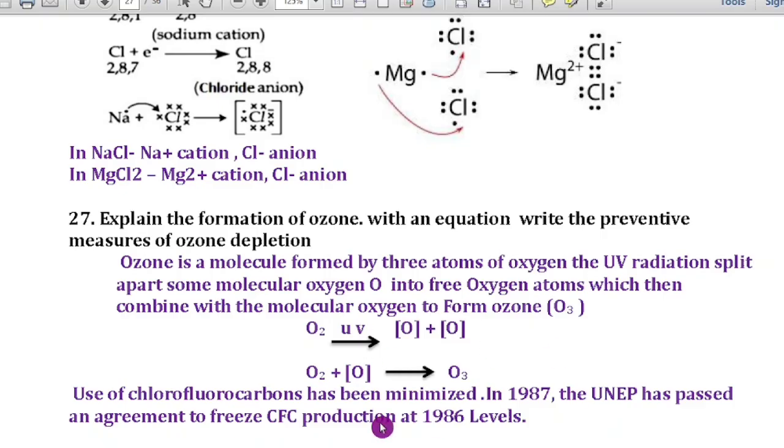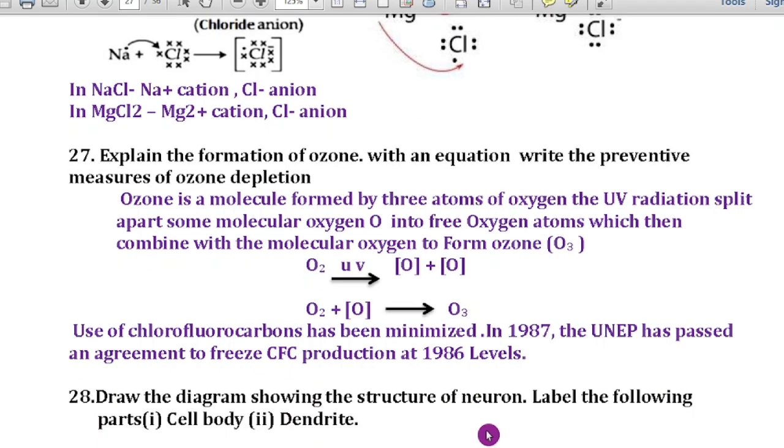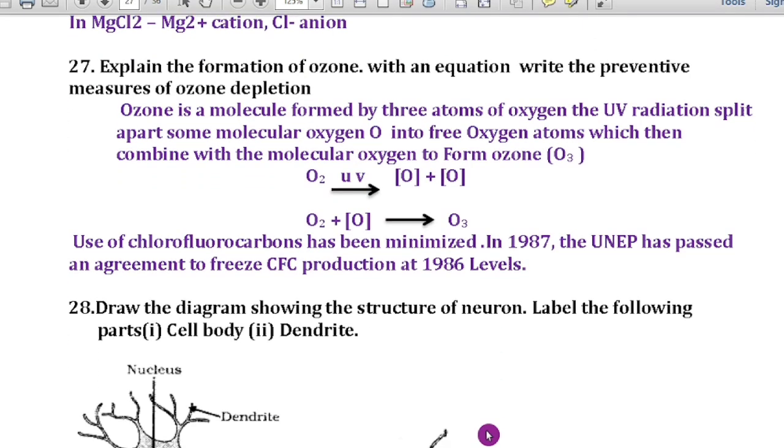What are the preventive measures of ozone depletion? Use of chlorofluorocarbon has been minimized. What we are using, the CFC, that should be minimized. Because of that reason, in 1987, the UNEP passed an agreement to freeze CFC production at 1986 level. So we have to cut down the uses of CFC.